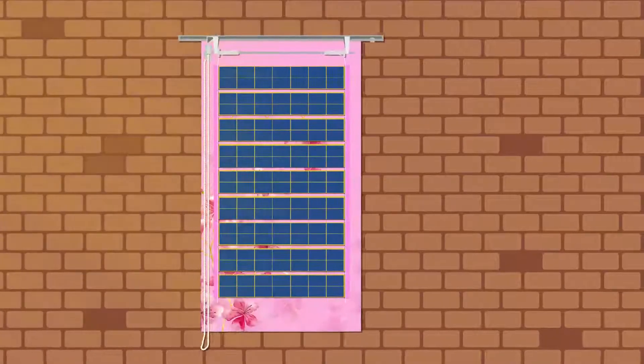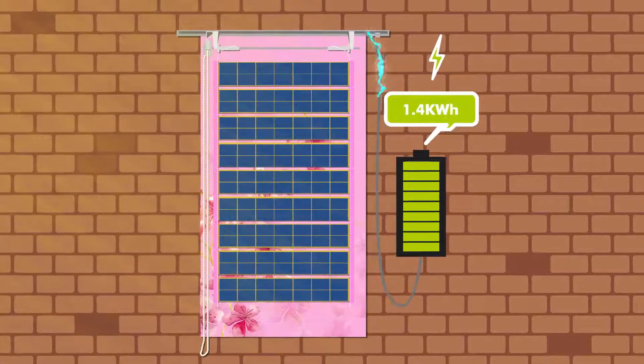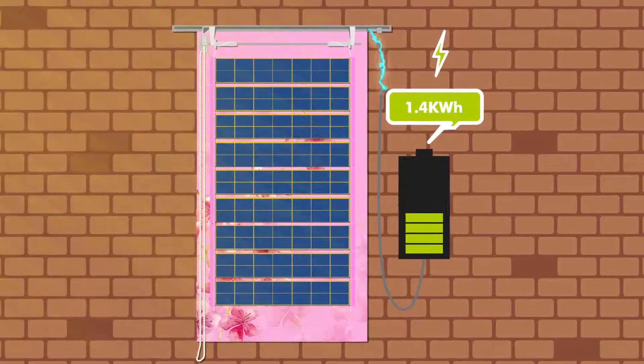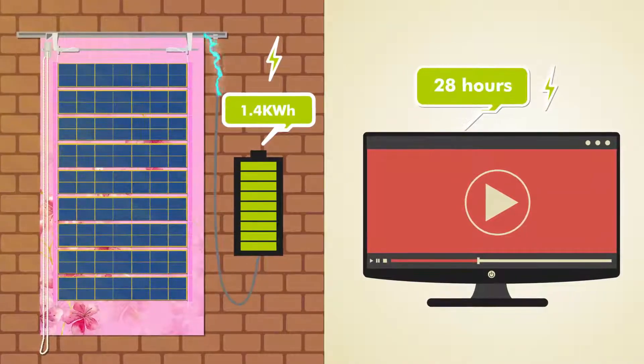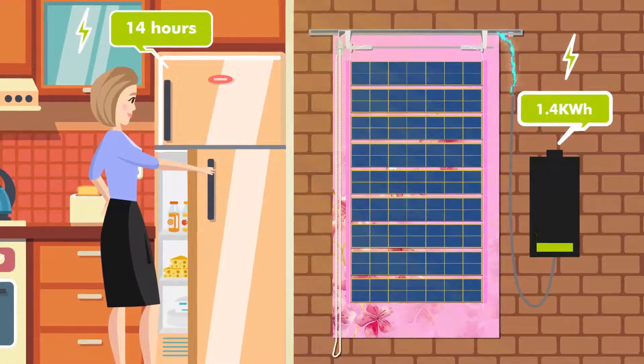Four square meters curtain can generate 1.4 kilowatts electricity per day. That you can even watch TV for 28 hours or power a refrigerator for 14 hours.